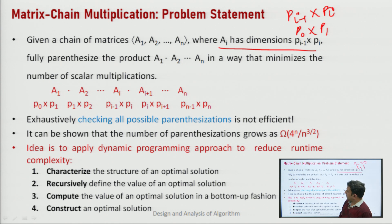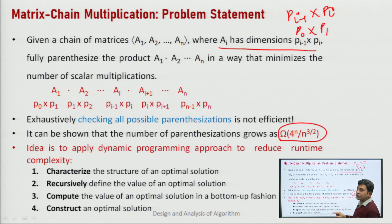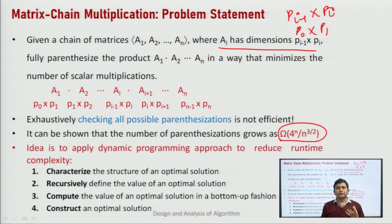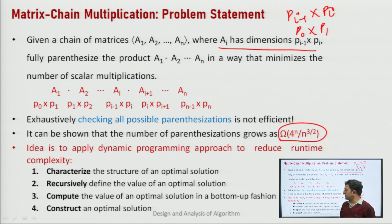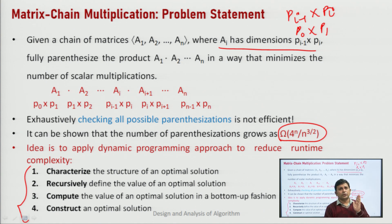If we have n matrices and check all possible parenthesizations, it would have a very high time complexity — equivalent to Ω(4^n / n^(3/2)), meaning exponential order. So our alternative solution is to apply the dynamic programming approach, which helps reduce time complexity. Dynamic programming incorporates four important steps: characterize the structure of the optimal solution, recursively define the optimal solution, compute the value of the optimal solution in a bottom-up fashion, and construct the optimal solution from the computed information.